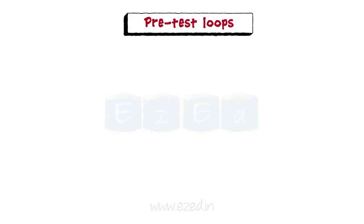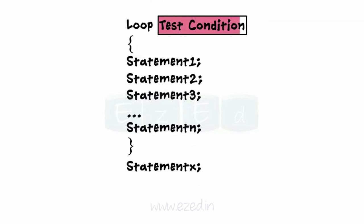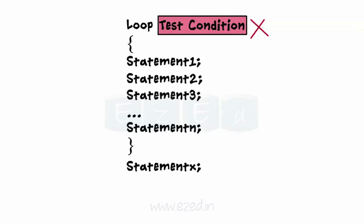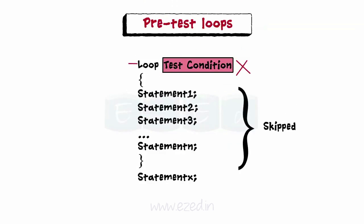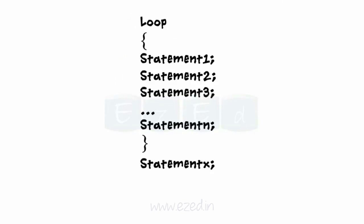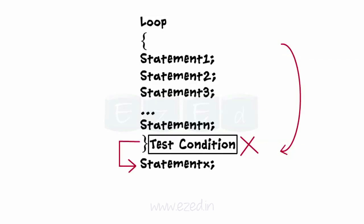In a pretest loop, the condition is checked before the start of each iteration. If the test condition is evaluated to be true, then the statements associated with the pretest loop's construct are executed repeatedly till the condition becomes false. If the test expression evaluates to be false, then the statements associated with the construct are skipped and the statements next to the loop are executed. In a post-test loop, the code is executed once and after the completion of the loop, the test condition is tested. If the condition evaluates true, then the loop repeats itself; and if the expression is false, then the loop stops and execution moves onto the next statement after the loop.